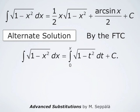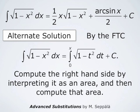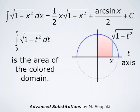This definite integral on the right-hand side can be computed by interpreting it as an area. The definite integral from 0 to x of square root of 1 minus t squared dt is the area of the colored domain under the graph of square root of 1 minus t squared and over the interval from 0 to x, where the horizontal axis is the t-axis. The graph of that function is the upper half of a circle of radius 1 with center at the origin — the blue curve indicated in this picture.